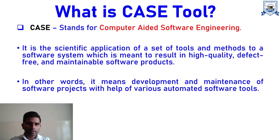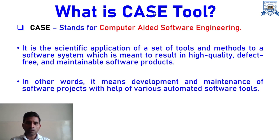CASE is an abbreviation that stands for Computer-Aided Software Engineering. Just from the abbreviation itself, if you try to get a glimpse of what CASE is — it is basically software engineering through computer automation tools. In short, we can say you are performing software engineering through computer automation tools.